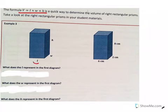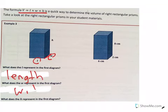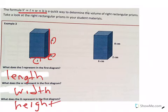We're going to look at the right rectangular prisms in your student materials. That's actually just this. We're going to look at this right now. What does the L represent in the first diagram? The L represents the length of the prism. W would be the width, how wide it is. L was how long it is. And then the H is going to be the height. So each of those letters represents one part of the rectangular prism.